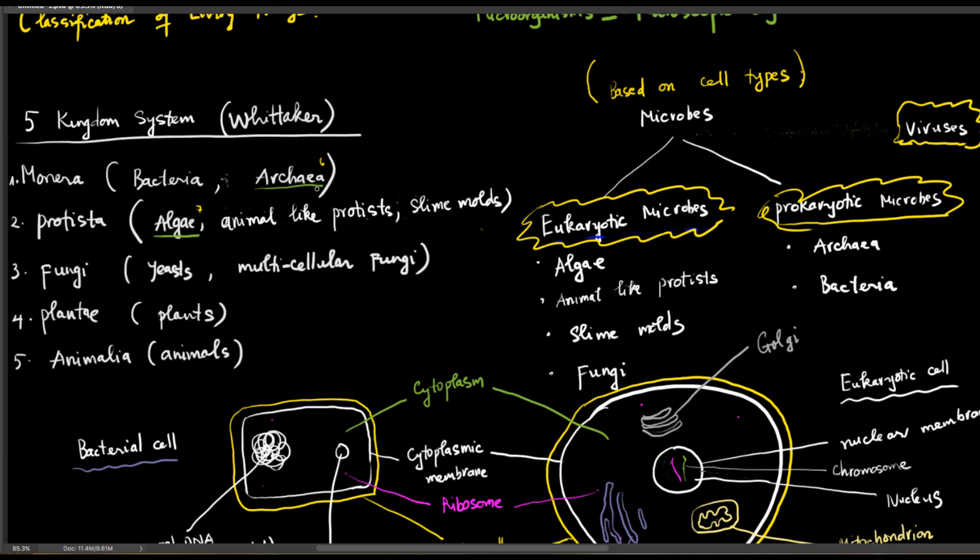Bacteria, archaea, most algae, unicellular protists, slime molds, and fungi are microorganisms. I said most algae because some algae actually have a very large cell size, like kelp, which can be seen with our naked eyes. Those are not microorganisms.